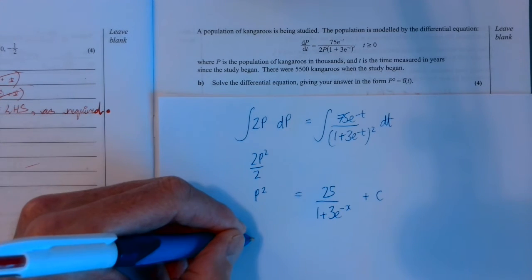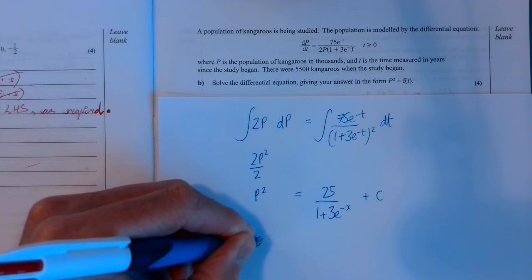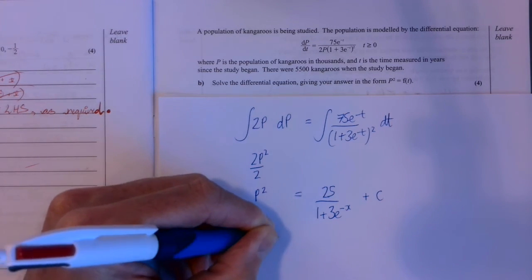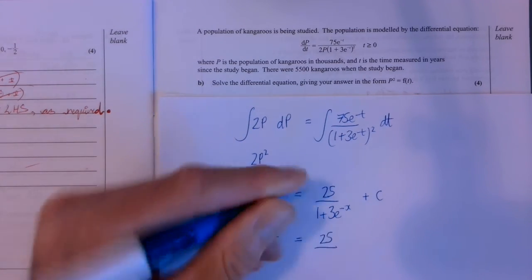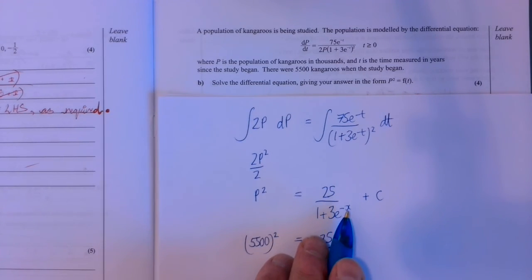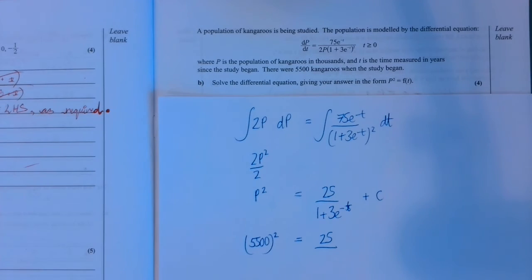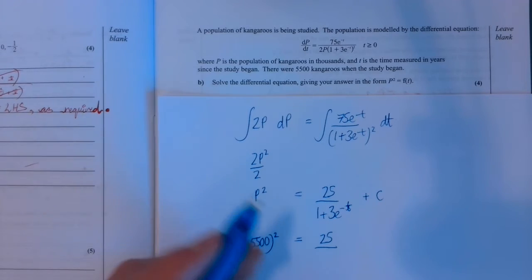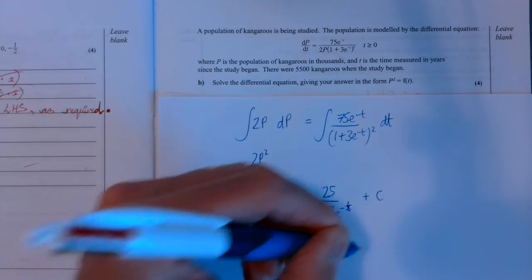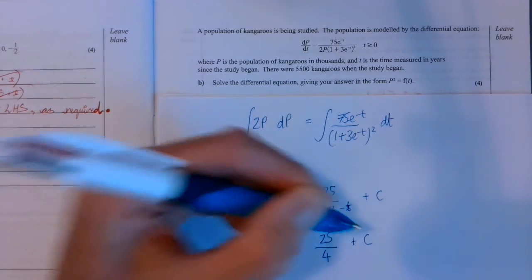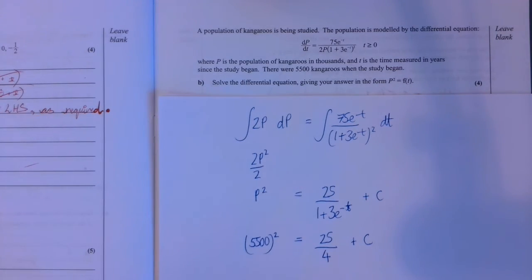So that would give me 5500 squared is equal to 25 over. So this is t. Sorry, not x. That's t. So when t is 0, minus 0, 0, same thing. So that becomes e to the power of 0, which is 1. So that becomes that.